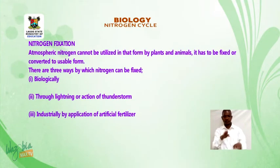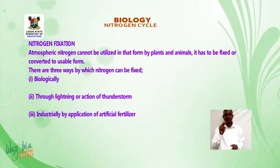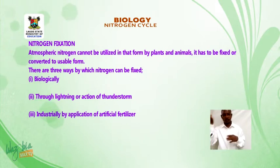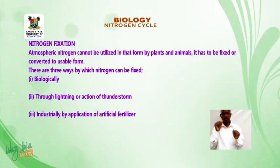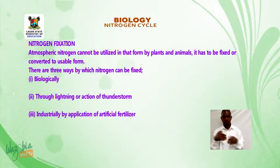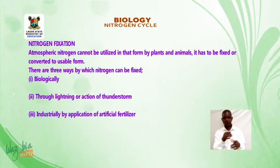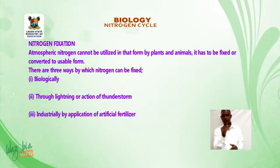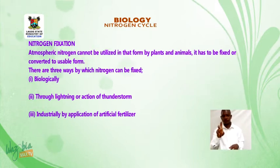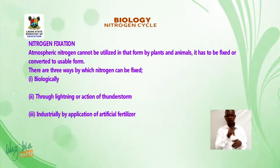Nitrogen fixation. Atmospheric nitrogen cannot be utilized in that form by plants and animals — it has to be fixed or converted to a usable form. There are three ways by which nitrogen can be fixed: 1. Biologically. 2. Through lightning or action of thunderstorms. 3. Industrially, by application of artificial fertilizer.